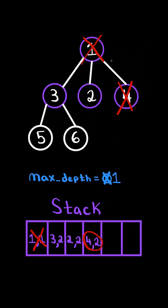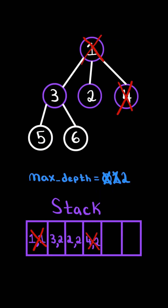We pop from the stack, and notice its depth is greater than max depth, so we update max depth. Node 4 does not have any children, so there is nothing to append to the stack. And we continue.